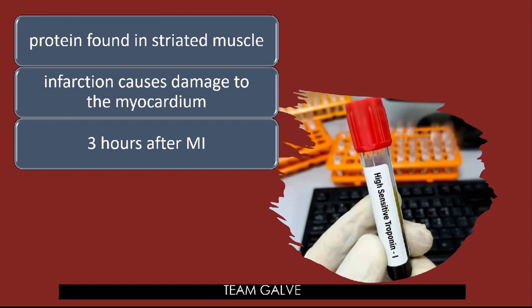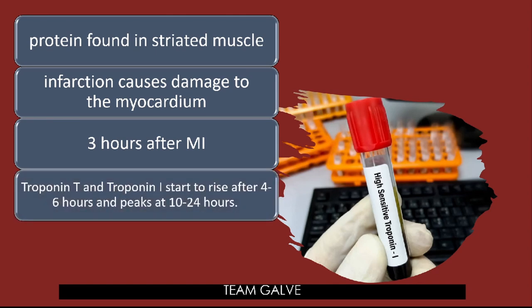In the hospital setting, you'll notice doctors frequently ordering cardiac marker extractions — repeated blood draws — because they are continuously trying to rule out MI. Troponin T and Troponin I start to rise after 4 to 6 hours of MI and peak at 10 to 24 hours. Troponin T returns to normal values after 10 days; Troponin I returns to normal after 4 days — that's why extractions continue even after chest pain resolves.